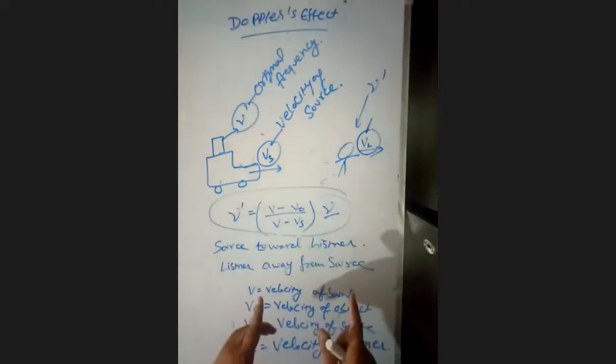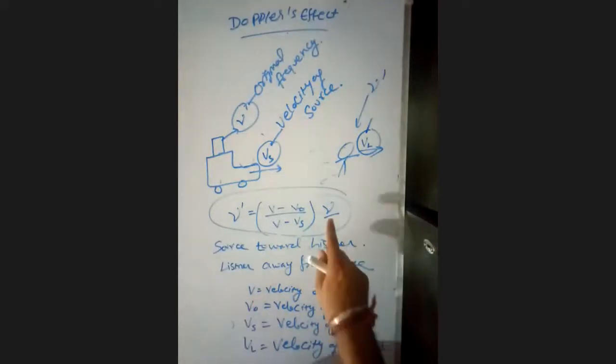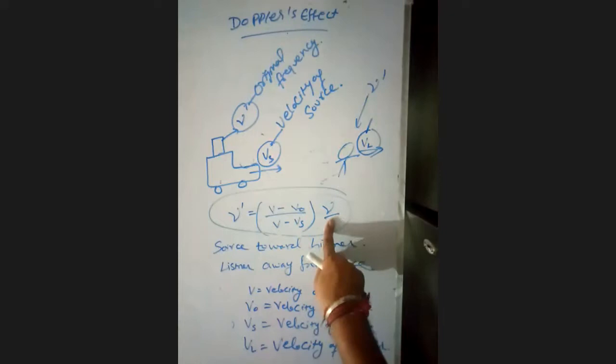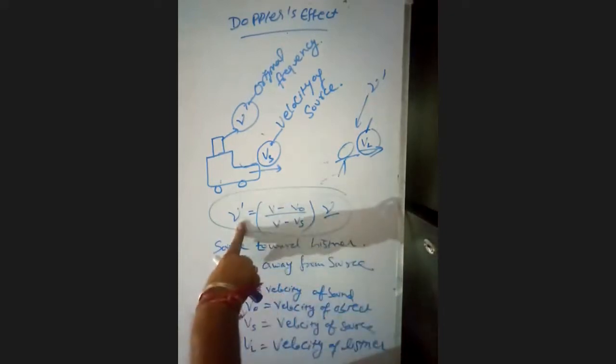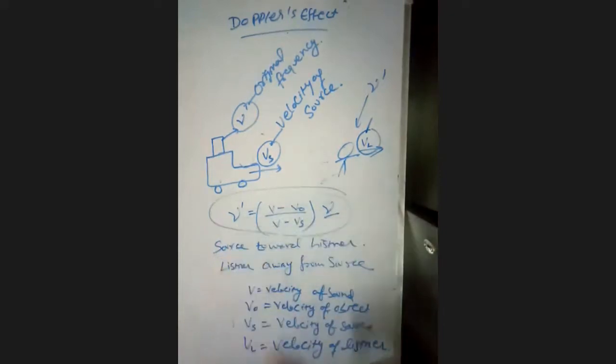The original frequency is ν (nu), and the apparent frequency is ν' (nu dash), which we have to find out.